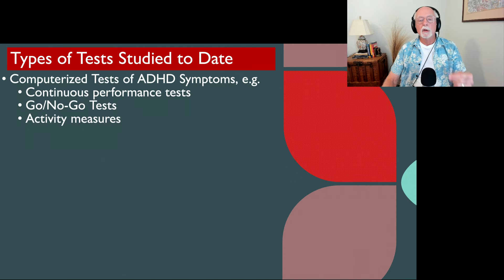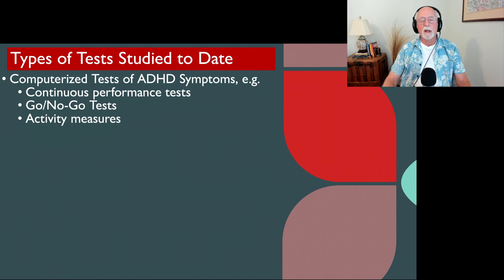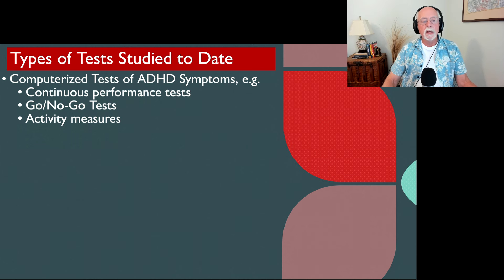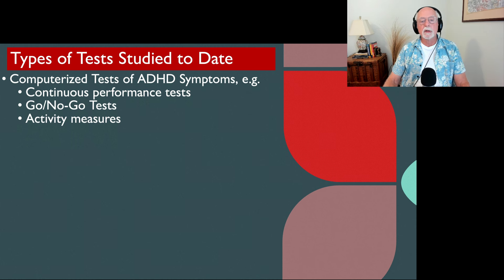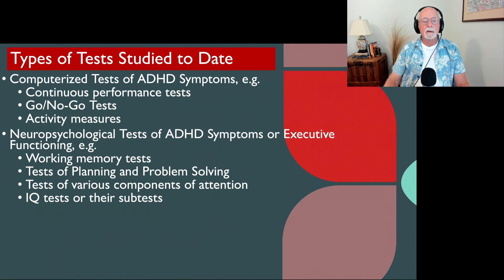Many tests have been used: computerized tests of ADHD symptoms, of attention, of inhibition, even of activity level. Some of these are known as continuous performance tests, like the Gordon test, the Connors test, the Tova, or the IVA. We've also looked at go-no-go tests. We've also measured activity level using wristwatches and videos that measure movement, and all sorts of devices. And none of them were sufficiently accurate to classify people in clinical practice, even though very useful in our group studies.